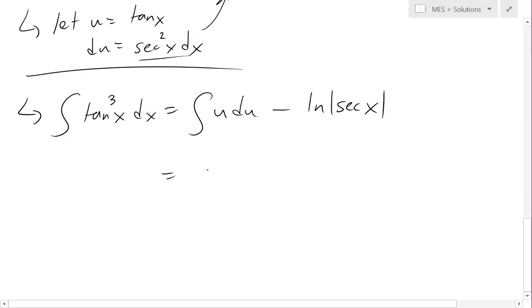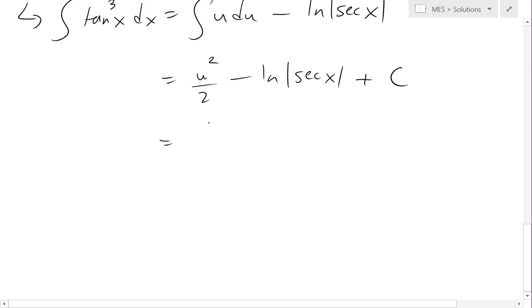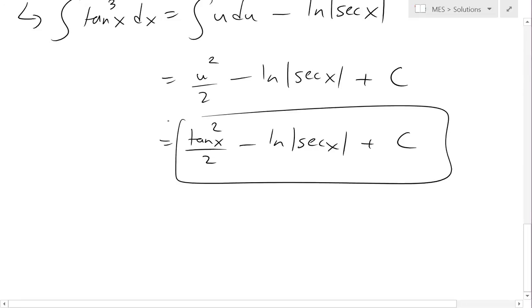So this equals u squared over 2 minus ln of secant x. Now we add the constant plus c. And we can substitute tan x back in, so we get tan squared x over 2 minus ln of secant x plus c. And there is our final answer.